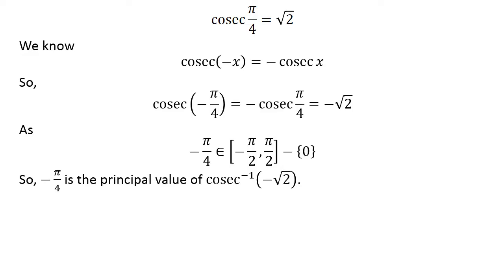So, -π/4 is the principal value of cosec^(-1)(-√2).